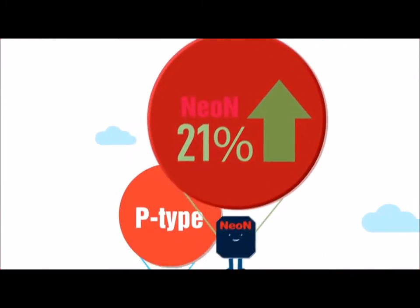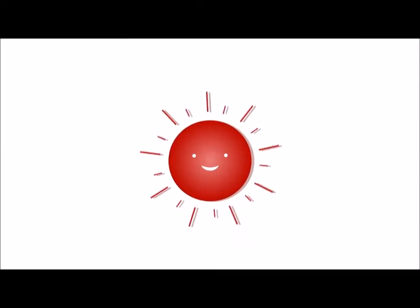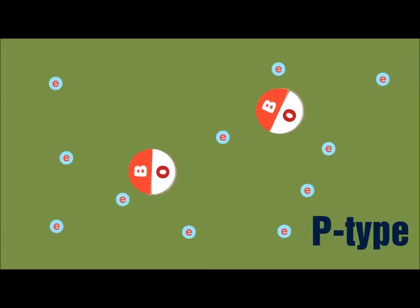Subsequently, our neon solar cell has achieved 21% greater efficiency. Once the conventional P-type cell receives light, its inner elements of boron and oxygen bond together to form a BO pair, which then discharges the electrons for its own generation.